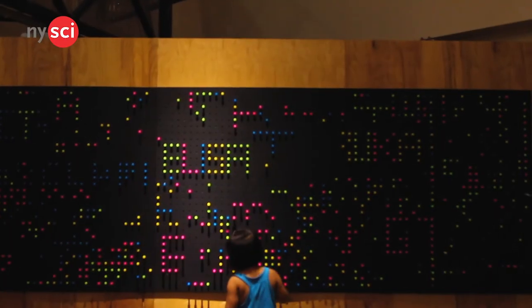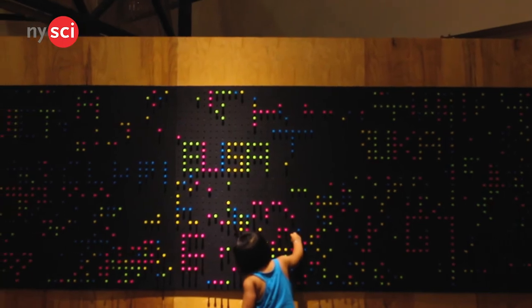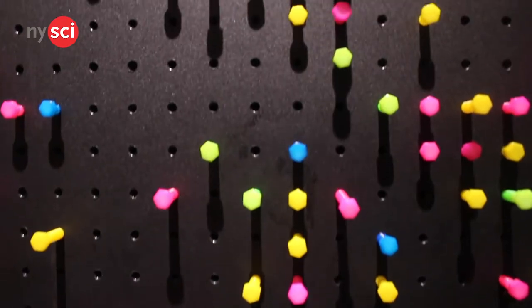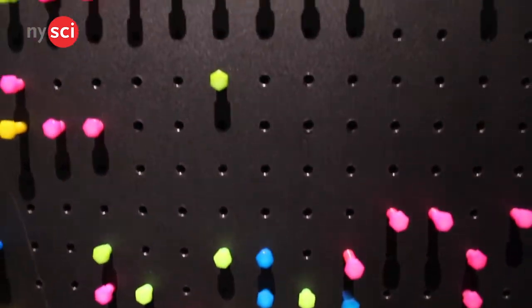Visitors definitely engage in different ways. Little kids are learning how to use their fine motor skills, so they're learning how to screw in the bolts into the Boltbrite. Bigger kids like to make images or pixelated images or they like to spell their names.